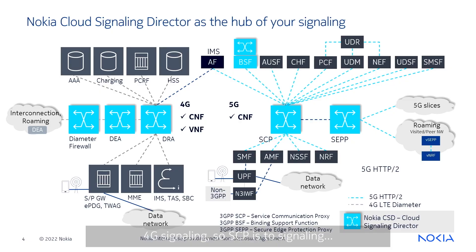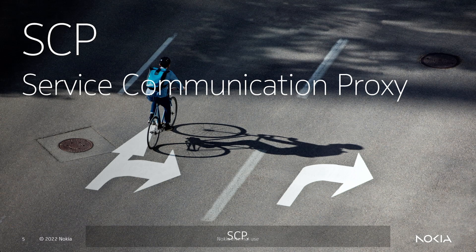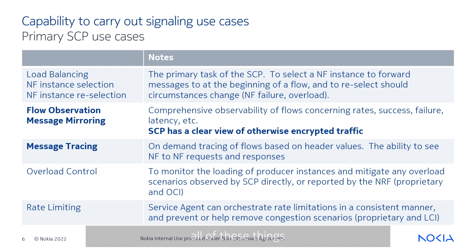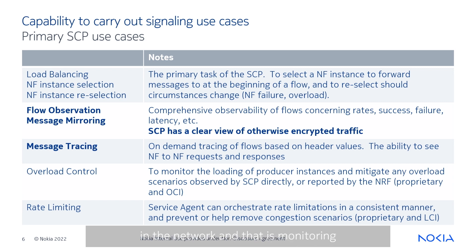We have been doing 4G signaling, so SCP is to 5G signaling what DRA was to 4G signaling. Nokia's SCP is a full function SCP which can carry out all the functions of load balancing, NF selection, reselection, overload control, throttling — all of that. These are things we typically hear when we think about standards, but what we do not hear is what it can do additionally because of its specific placement in the network, and that is monitoring and tracing or counting of packets.